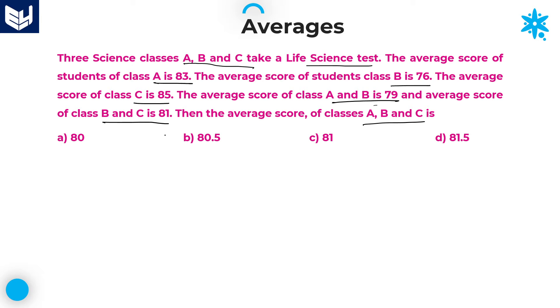Here first of all, we can use allegation principle in order to get the answer in a simplest way. Here A average is 83, B average is 76, and A and B average together is 79. Now you can apply the allegation principle for this one. Difference between these two is 3 and the difference between these two is 4. A is to B is equal to 3 is to 4.